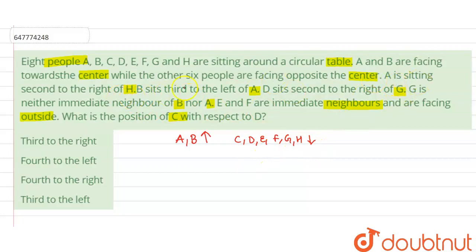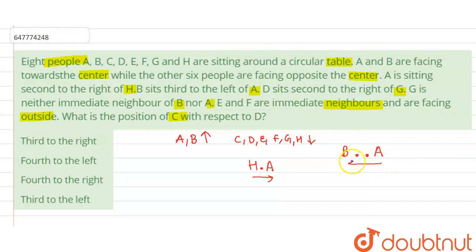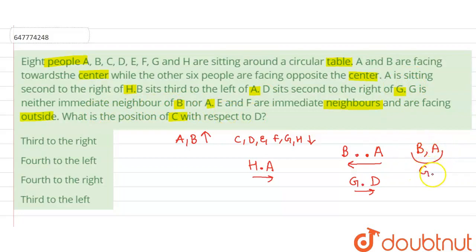Now, A is sitting second to the right of H — meaning H's first right and second right gives us A's position. B sits third to the left of A — so A's first left, second left, and third left is B. D is second to the right of G — G's first right and second right is D. G is neither an immediate neighbor of B nor A, so G cannot be placed next to either of them.